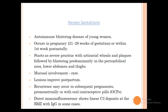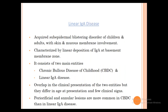Herpes Gestationis (Pemphigoid Gestationis): essentially Bullous Pemphigoid occurring in pregnant women. Occurs during the second trimester, at 21–28 weeks of gestation, or within the first postpartum week. Lesions start as severely pruritic urticarial wheals and plaques characteristically on the periumbilical area, lower abdomen, and thighs, followed by tense blisters. Recurrence may occur in subsequent pregnancies or with oral contraceptive pills. DIF: C3 and IgG deposits at the basement membrane zone. Treatment: steroids (safe in pregnancy).